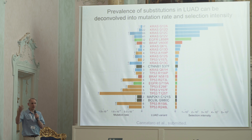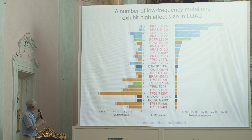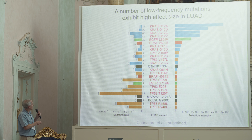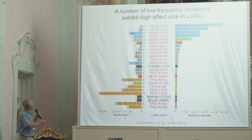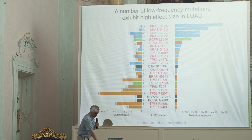A number of low-frequency mutations exhibit high effect size. For example, KRAS Q61L is only at prevalence three, but its mutation rate is also really low, so its selection coefficient is fairly high. Catenin B1, present in only four patients, has a very high selection coefficient. BRAF N581S — another well-known cancer gene — and a number of EGFRs and P53 mutations also appear. In colon adenocarcinoma, BRAF V600E shows high prevalence and very high selection intensity, as does KRAS and P53. There's also a non-coding SMV at prevalence three with very high selection intensity — an interesting candidate.